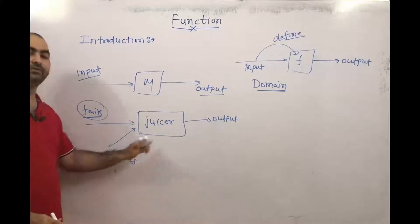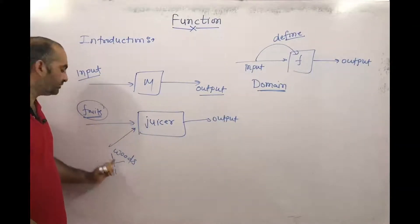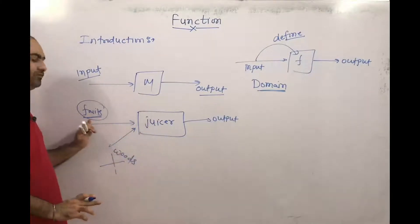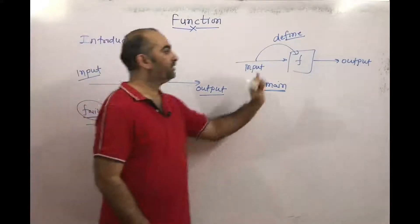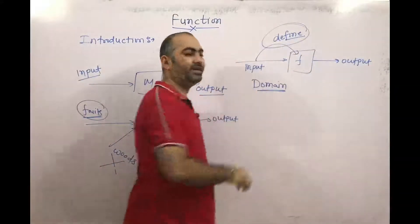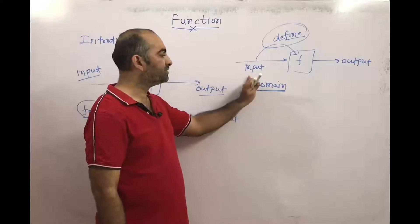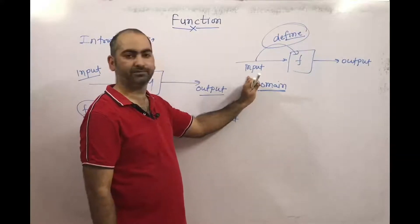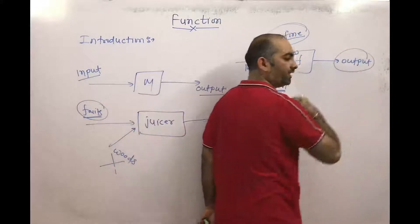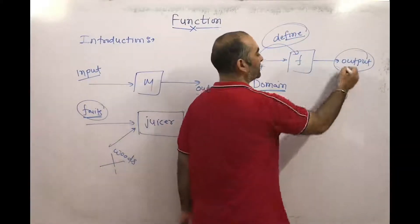Because for a juicer, we can take fruits only — we can put fruits only, not wood. So for a juicer, the domain is fruits. Similarly, for a function, the domain is where the function is defined — that input is the domain. And with respect to the domain values, corresponding to each input we will get some output value. Those corresponding output values we call the range.